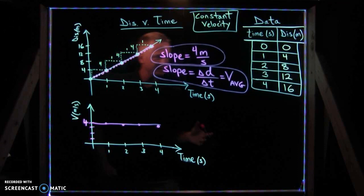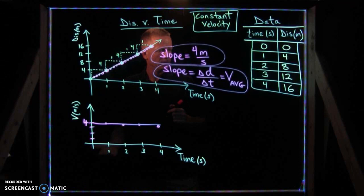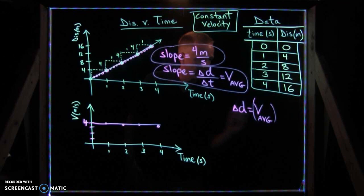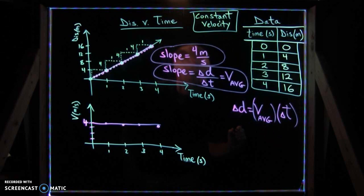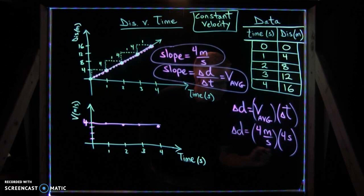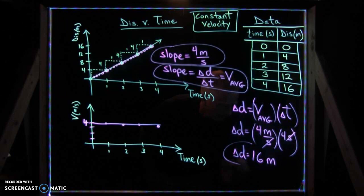And if you wanted to ask the question, okay, so how far do I run if I'm running for four seconds at this same rate, there's a few simple things you can do. You could rearrange this equation and recognize that the change in distance is simply your average velocity times the time interval. And if your average velocity is four meters per second for a time of four seconds, the units of seconds cancel out when you multiply this, you're left with four times four, or 16 meters of displacement.